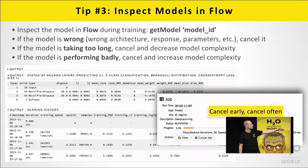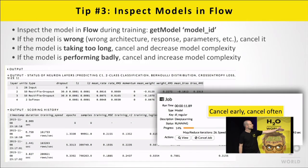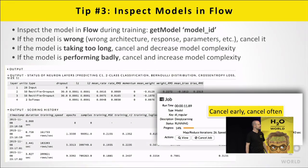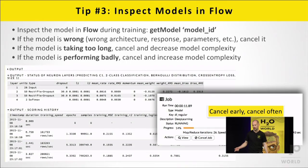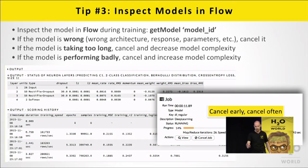You can look at the model when it's at 14% progress and already see an output scoring history, the network architecture, that it's predicting C1 as a two-class classification problem, how many samples have been trained, how many epochs, how fast it's training. All these things come out of the user interface. Most tools only show you performance at the end; in H2O, you get real-time feedback. That's very valuable.